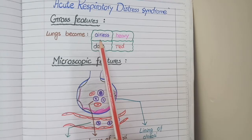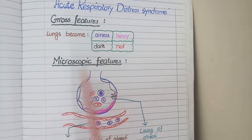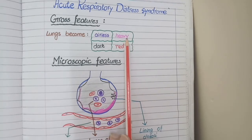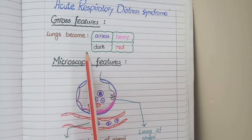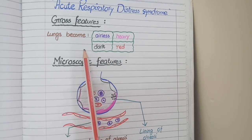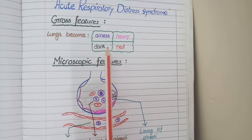So the loss of air will make the lungs airless. And as there is edema in the lungs, lungs will become heavy. And also as there is small amount of hemorrhage in alveoli, lungs will become dark and red. So overall the lungs appear airless, heavy, dark and red.